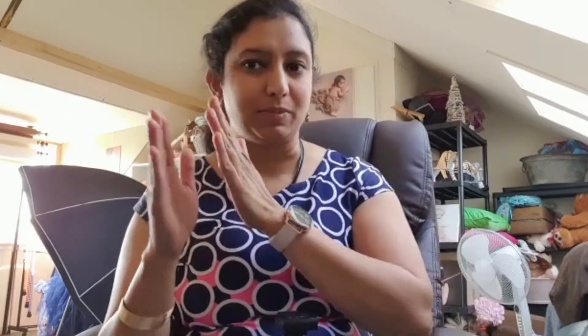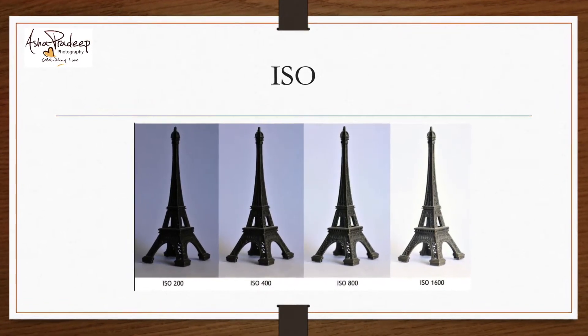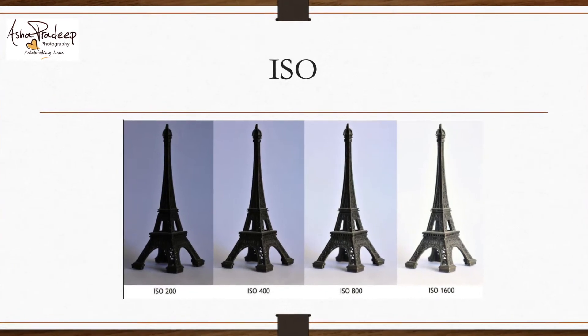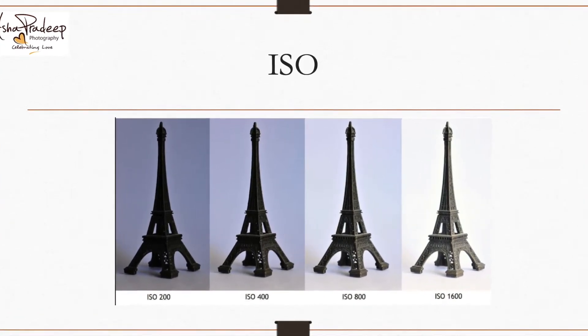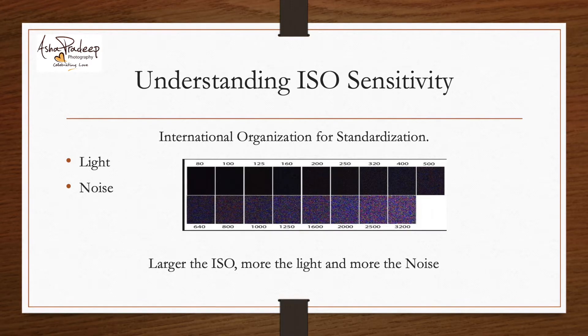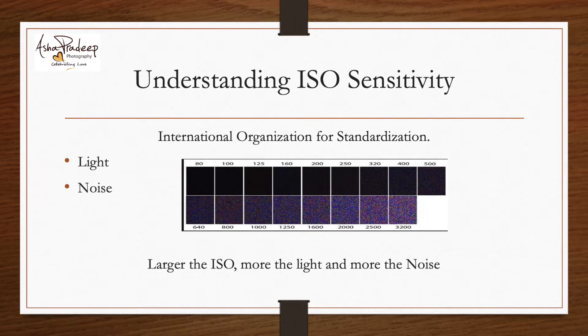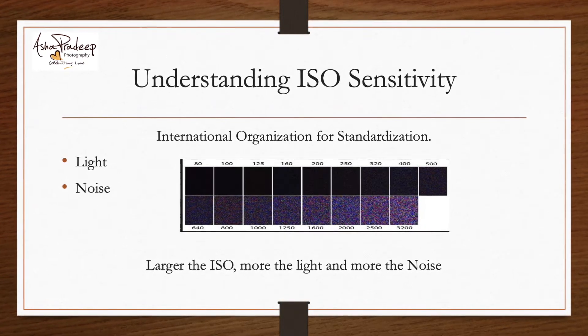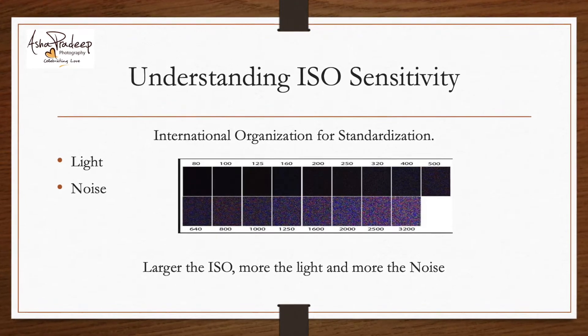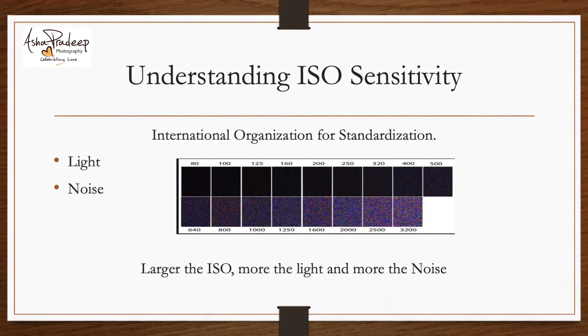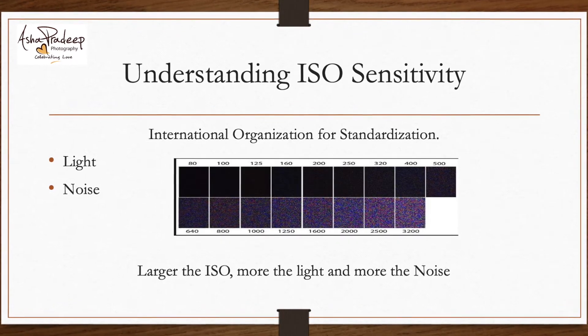ISO stands for International Organization for Standardization. To put it in simple terms: the larger the ISO, the larger the noise. As I explained in my previous video, there are two functionalities for each of these pillars. The first functionality is lighting. For ISO, along with lighting, it also brings noise.